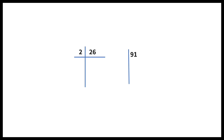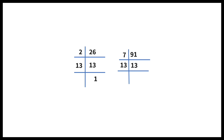Let us take the numbers 26 and 91. 26 is an even number, so it is divisible by 2. 2 thirteens are 26, and 13 ones are 13. 91 is not an even number, so not divisible by 2. It is neither divisible by 3. The next prime number is 5; it is not divisible by 5, but it is divisible by 7. 7 thirteens are 91, and 13 ones are 13.